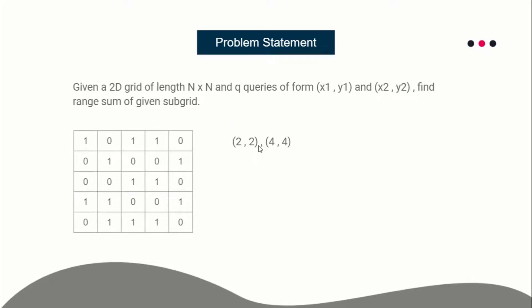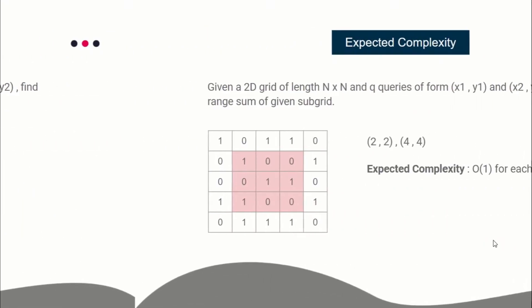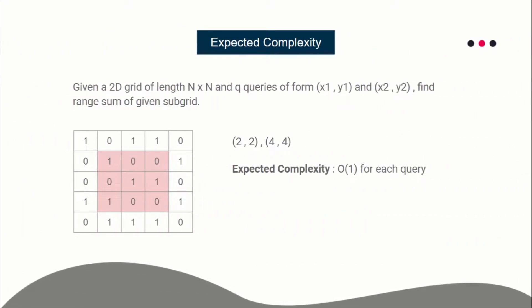For example, this is the grid and you have to find the answer of the query (2,2) to (4,4) — basically you want to get the range sum of that sub-grid. That is what is intended. The expected time complexity for this problem is that you will be able to answer each query in constant time.